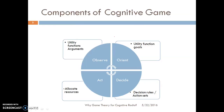The main components of a cognitive game are: observe, orient, decide, and act. The arguments of the utility function can be related to the observe phase. Orient is analogous to the goals of the utility function. Decide resembles the decision rules or action sets, and act — the last phase — is where the necessary resources for the devices are allocated. Thus, game theory can be well utilized for modeling and analysis of cognitive radio.